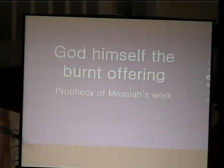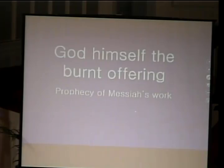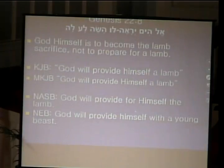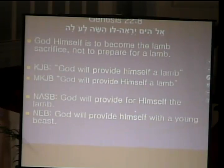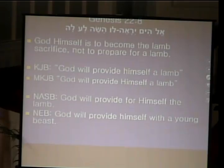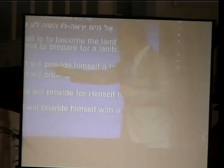Another issue concerns God himself providing the burnt offering, according to the story of Isaac's sacrifice at Mount Moriah. This is a prophecy of the Messiah's work. In Genesis 22, the Hebrew reads 'Elohim yireh lo ha-seh' — meaning God himself is to become the lamb sacrifice, not merely to prepare or provide a lamb. The King James Bible gives the exact translation: 'God will provide himself a lamb.' 'Himself' — meaning he himself is the sacrifice.